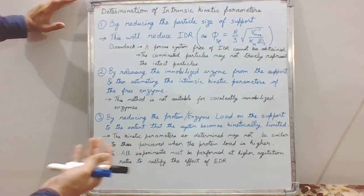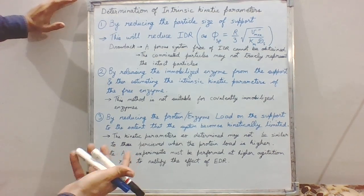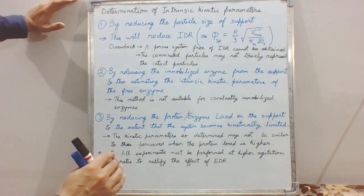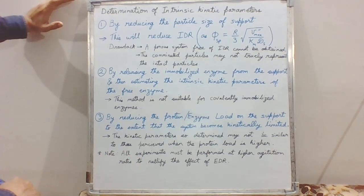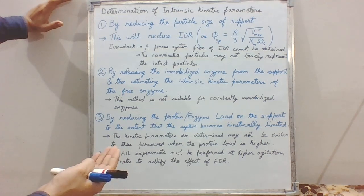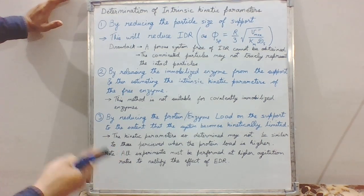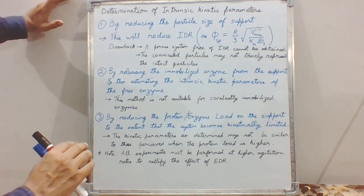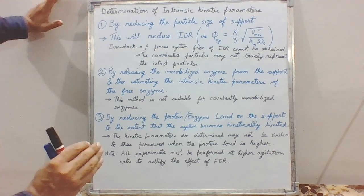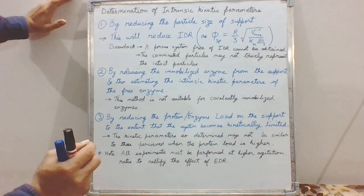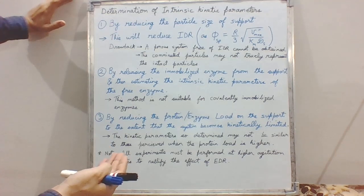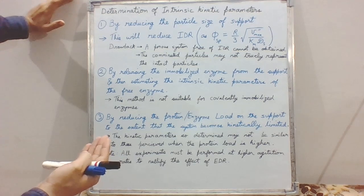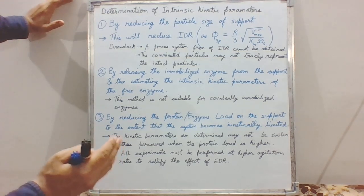When we decrease the enzyme load, the substrate reaches the enzyme active site more frequently than the conversion at the active site. To know when our system becomes kinetically limited: the immobilized enzyme at that protein load will show Michaelis-Menten kinetics — the curve will resemble Michaelis-Menten kinetics rather than the linear curve that appears for a completely diffusionally limited system. We choose that protein load and use those kinetic constants as the intrinsic kinetic parameters.